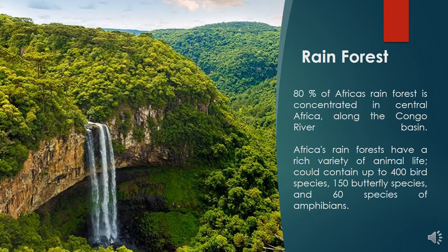Most of Africa's native rainforest has been destroyed by development, agriculture, and forestry. Today, 80% of Africa's rainforest is concentrated in Central Africa, along the Congo River basin. Africa's rainforests have a rich variety of animal life — a 6-kilometre patch could contain up to 400 bird species, 150 butterfly species, and 60 species of amphibians. Important mammals include African forest elephants, gorillas, the black colobus monkey, and the okapi, a donkey-like giraffe.